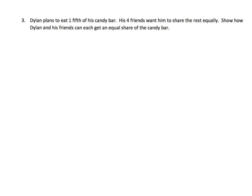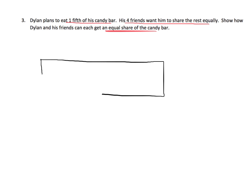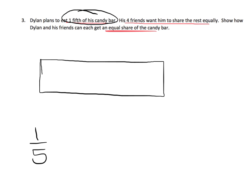Dylan plans to eat one-fifth of his candy bar. His four friends want him to share the rest equally — show how Dylan and his friends can each get an equal share. We're going to draw a picture using something that looks like a tape diagram. There's Dylan's candy bar. He plans to eat one-fifth, so we have to cut the candy bar into five equal pieces.